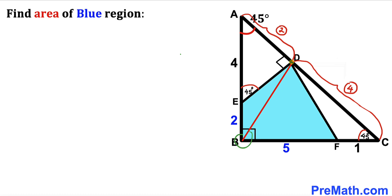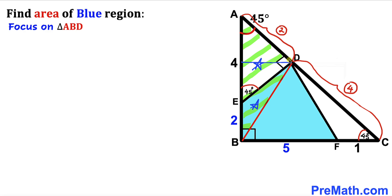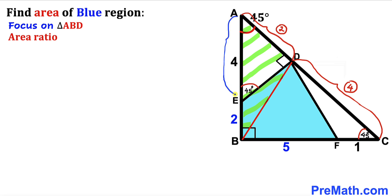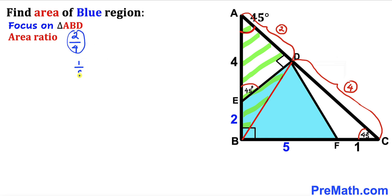Connecting point B with point D, let's focus on triangle ABD, which consists of two individual triangles with the same height. The base of one triangle is 4 and the base of the other is 2, so their area ratio is 2 divided by 4, which reduces to 1 to 2. If the area of one triangle is 1, the area of the other is 2.